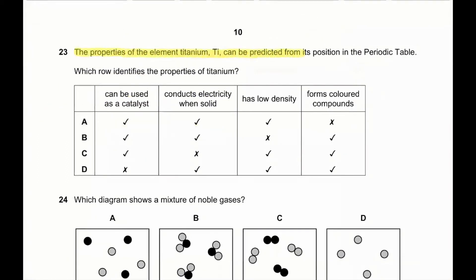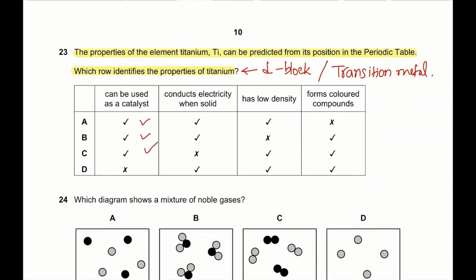Question 23: the properties of titanium can be predicted from its position on the periodic table. Titanium is a d-block element — it's a transition metal. Since it is a transition metal, can it be used as a catalyst? Yes. Does it conduct electricity when solid? Yes. Does it have a low density? No, it has a very high density. Does it form colored compounds? Yes, transition metals form colored compounds. So B is the correct answer.